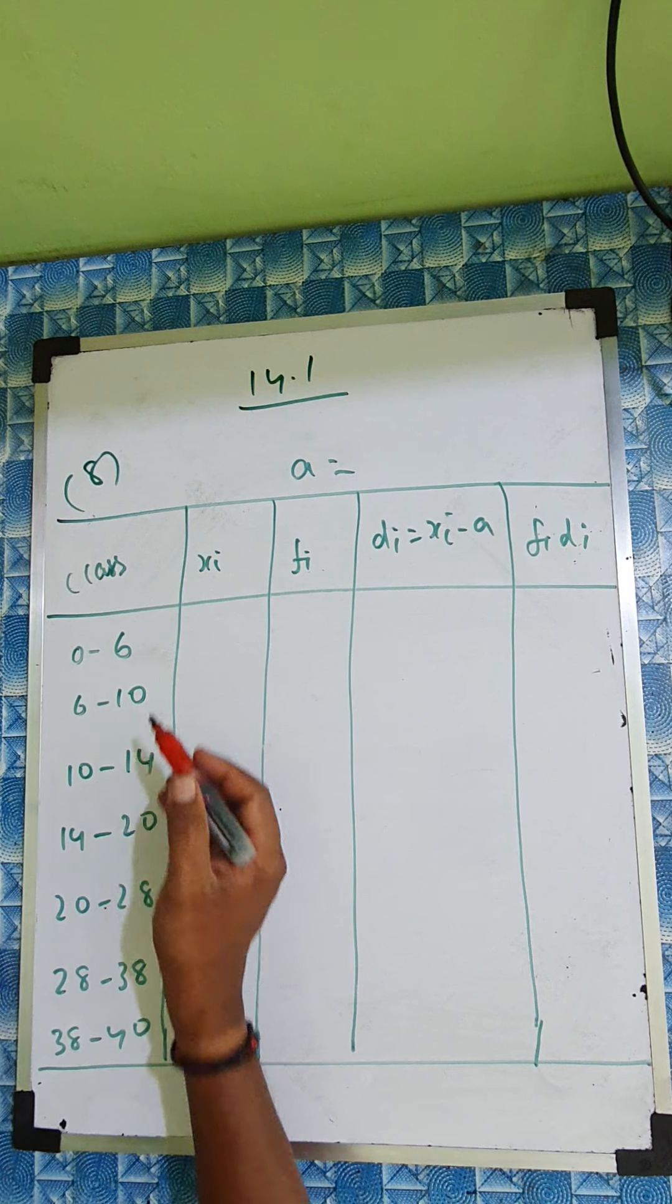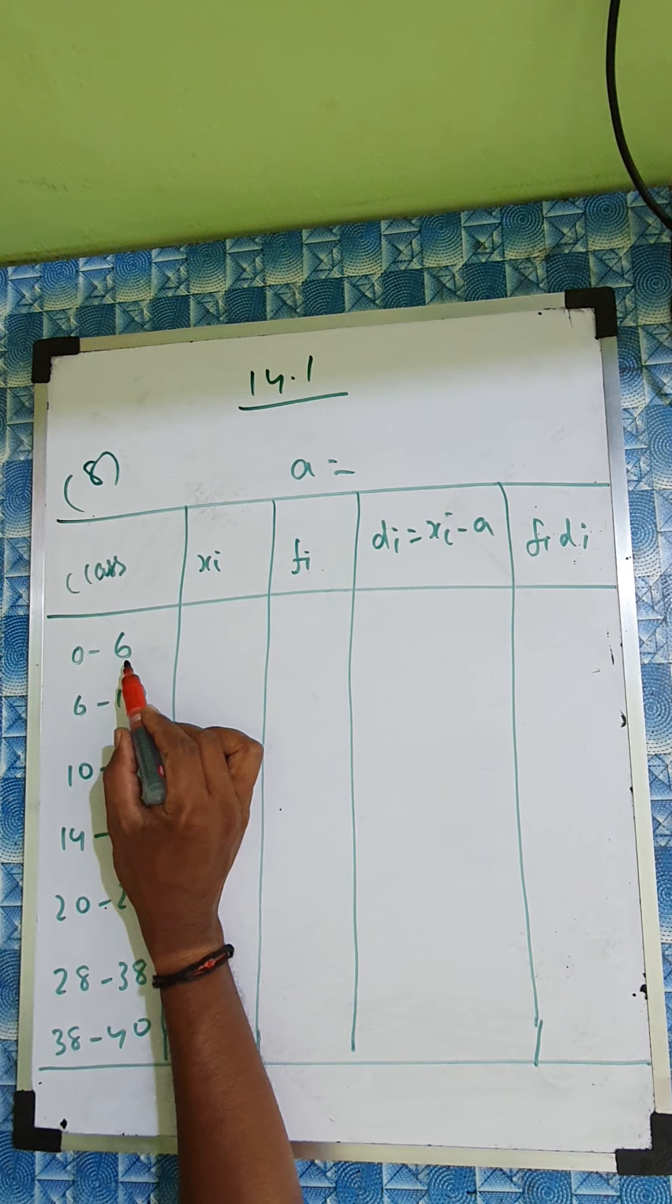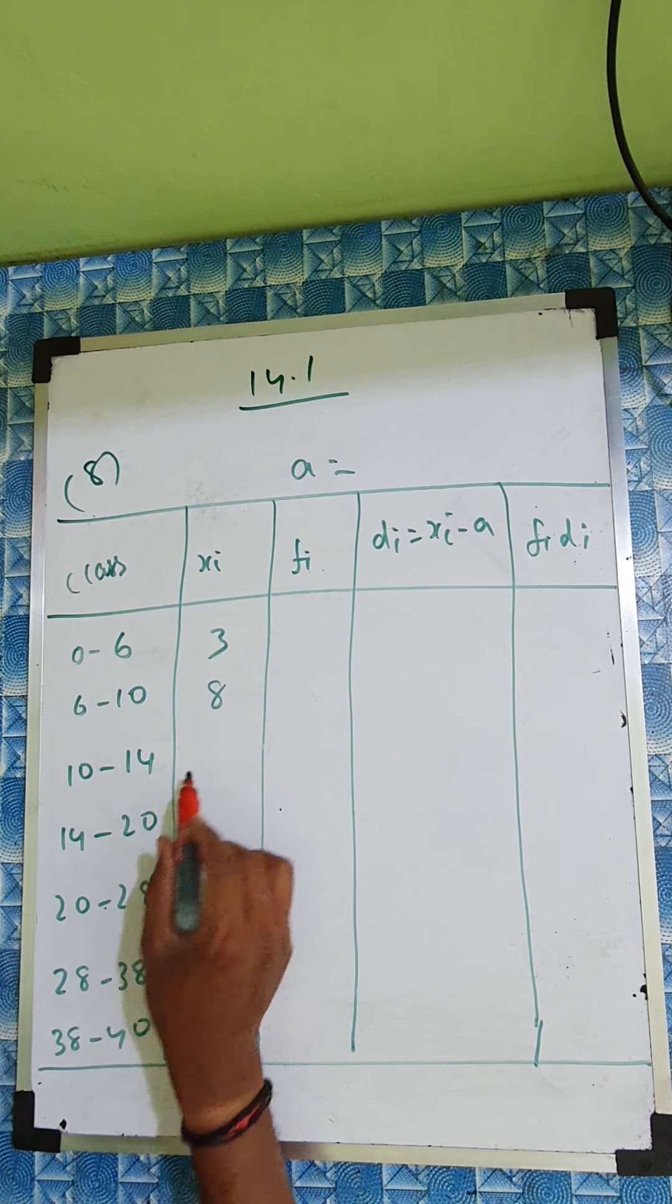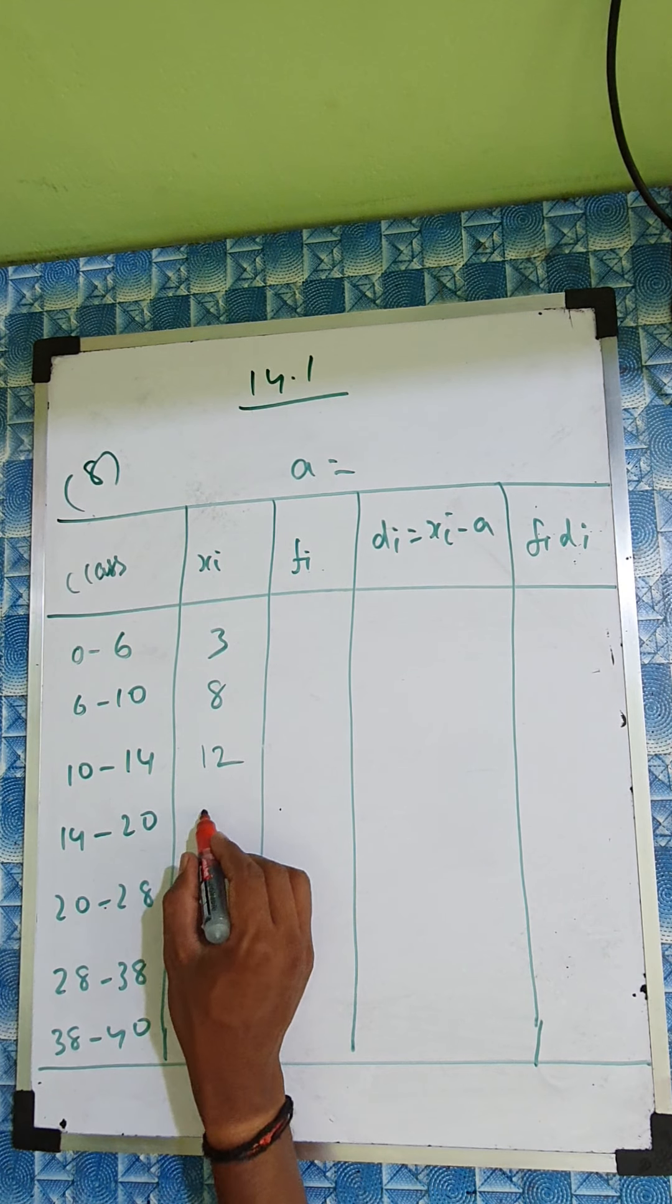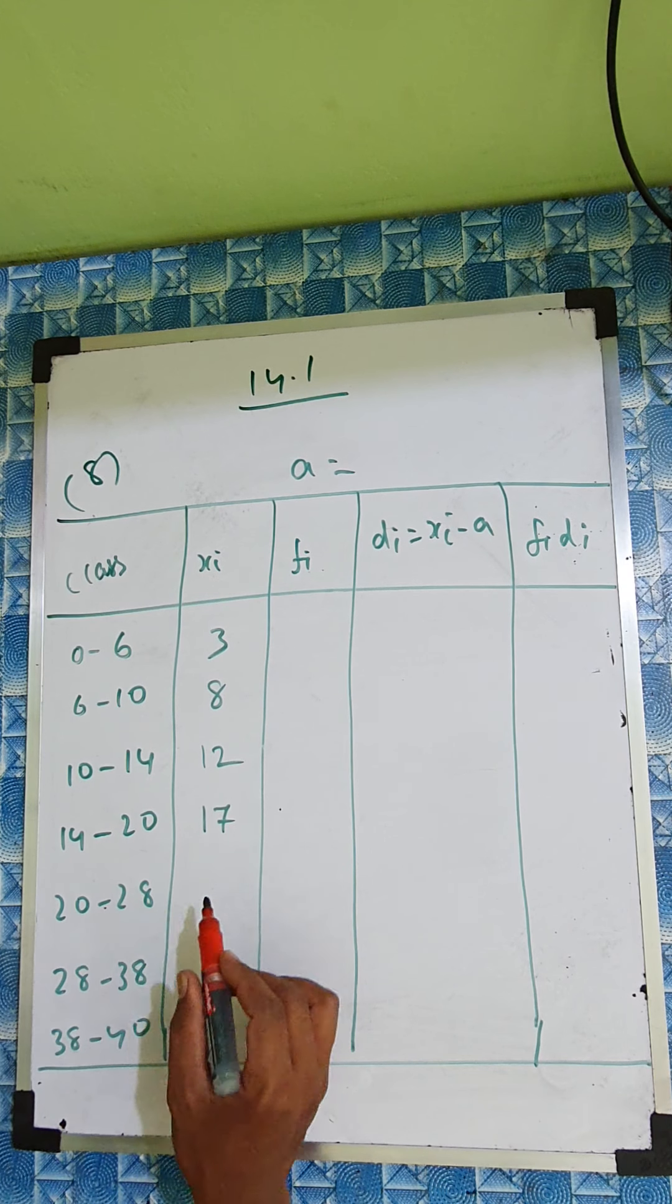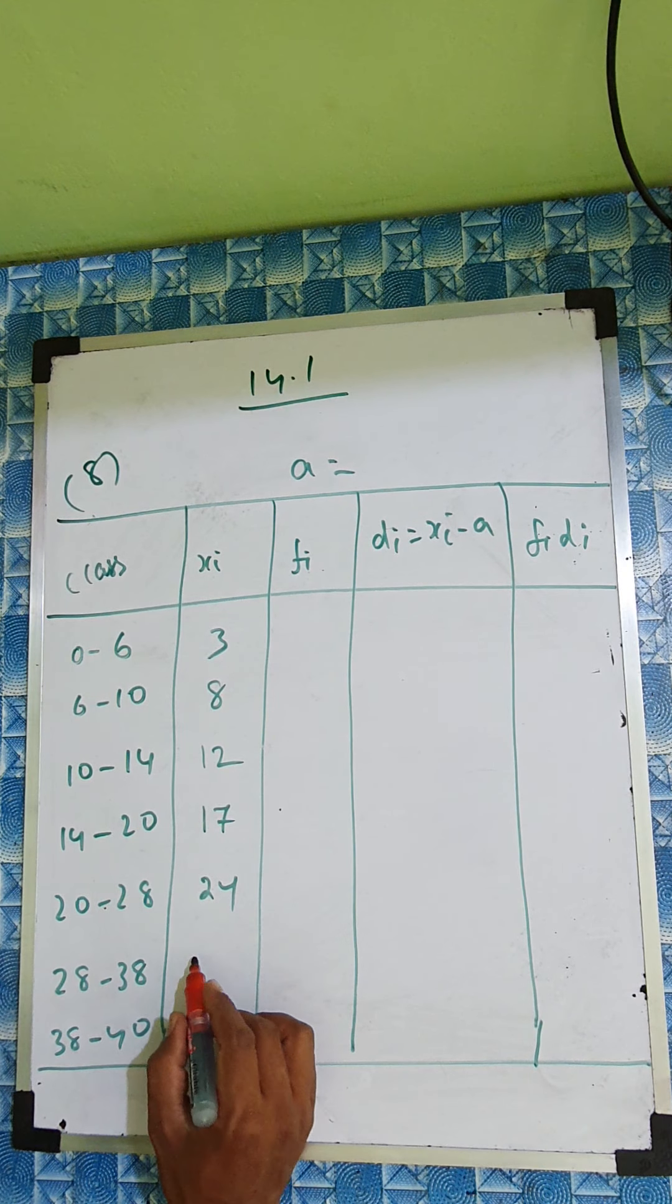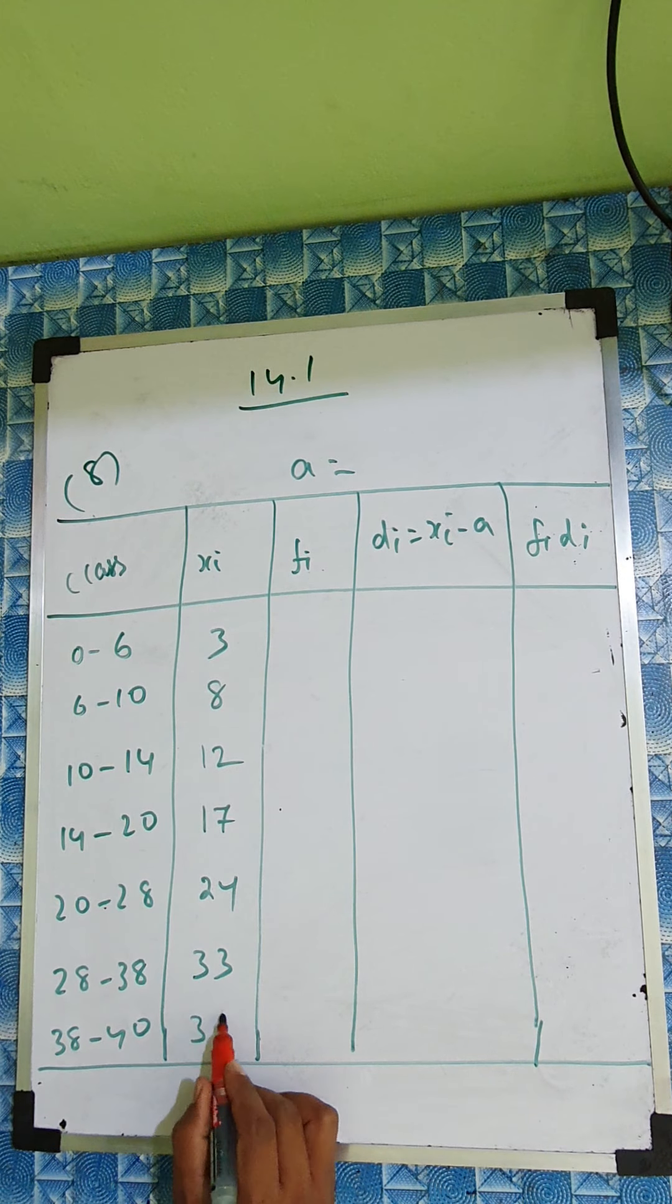Now find the midpoint value. The difference is not the same, so you have to add and divide by 2. So 0 plus 6 is 6, 6 by 2 is 3. 6 plus 10 is 16, 16 by 2 is 8. 10 plus 14 is 24, 24 by 2 is 12. 20 plus 14 is 34, 34 divide by 2 is 17. 28 plus 20 is 48, 48 divide by 2 is 24. 28 plus 38 is 66, divide by 2 is 33. 38 and 40 between only 39 is there.